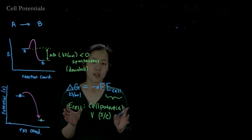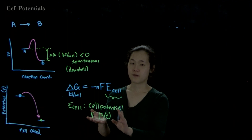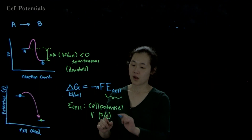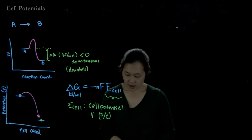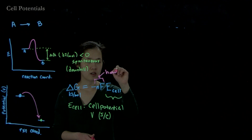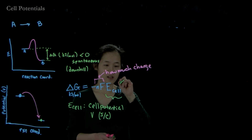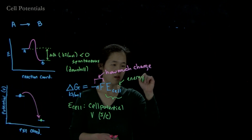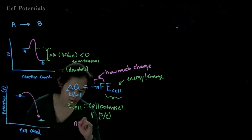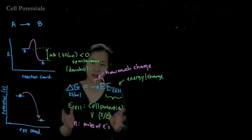The cell potential is different for every cell — for every chemical reaction under certain conditions, we are at a certain cell potential expressed in volts. To convert this to energy units, we need to know how many coulombs of charge are being passed. That's where the negative nF comes in. The cell potential is energy per charge. Here, n is the number of moles of electrons being passed, and this comes from our balanced electrochemical reaction.